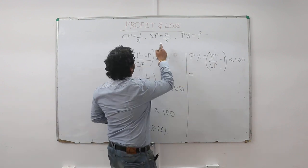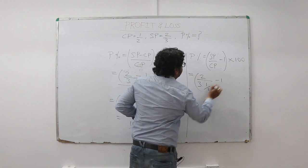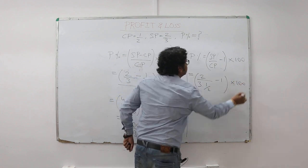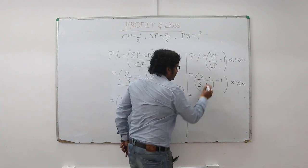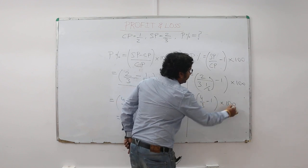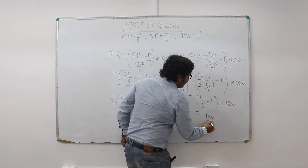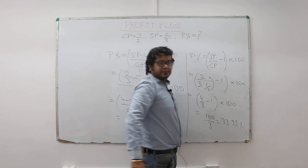Put the values. This becomes 2 by 3 divided by 1 by 2. There is no need to take LCM here. This goes up. You get 4 by 3 minus 1 into 100. That is 100 by 3 is equal to 33.33%.